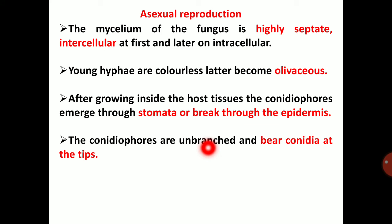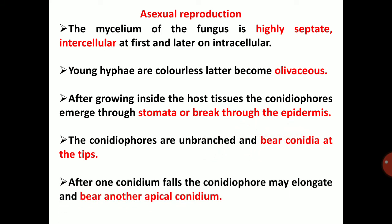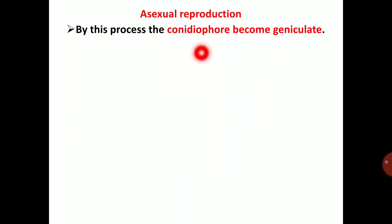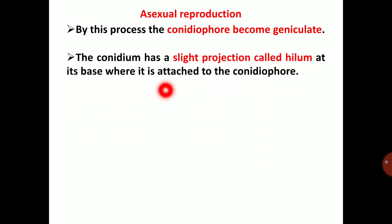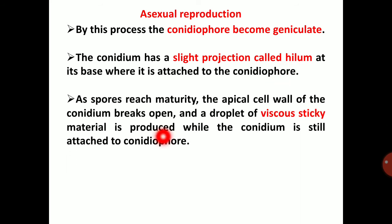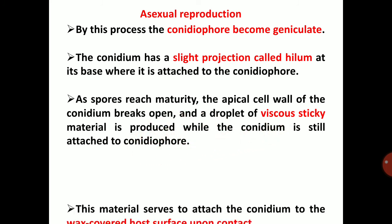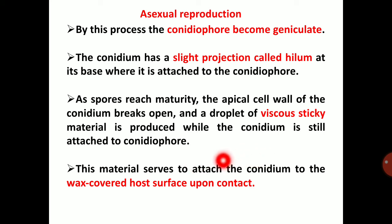The conidiophores are unbranched and bear conidia at their tips. After one conidium falls, the conidiophore may elongate and bear another apical conidium. The conidiophores are geniculate. The conidia have a slight projection called the hilum at the base where they are attached to the conidiophore.